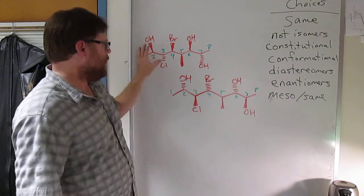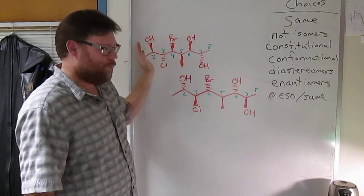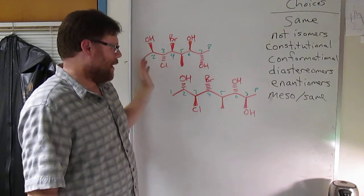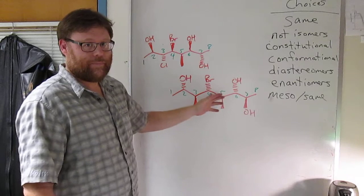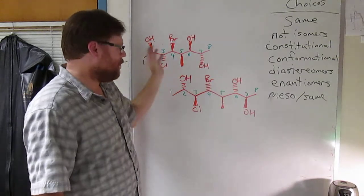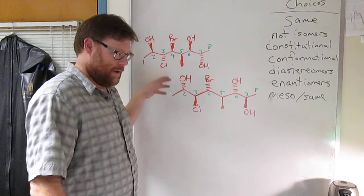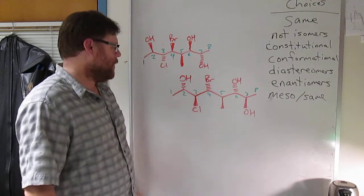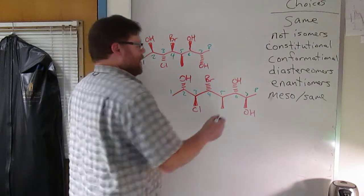So if all of them are the same, or if one chiral center inverts and one stays the same—one or more—if one or more chiral centers invert and one or more chiral centers stay the same, then they have to be diastereomers.